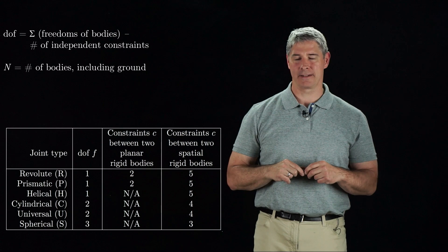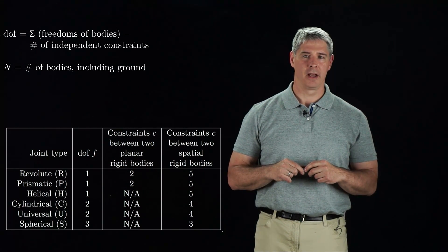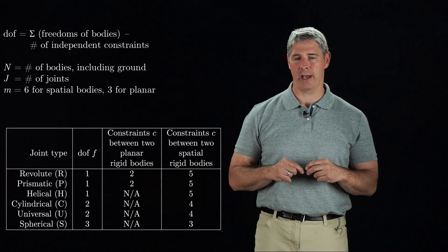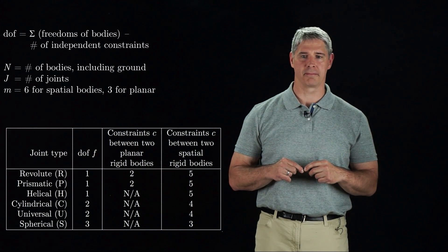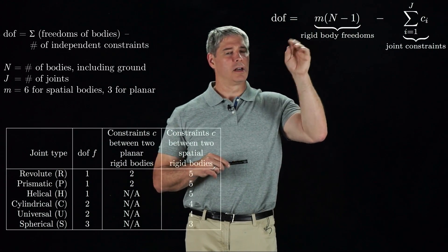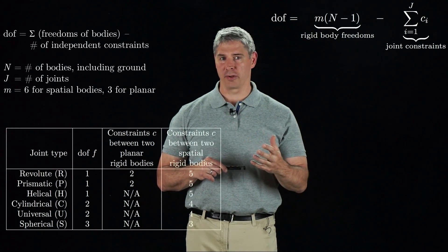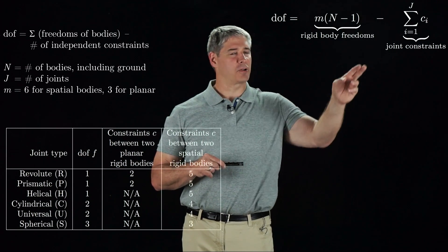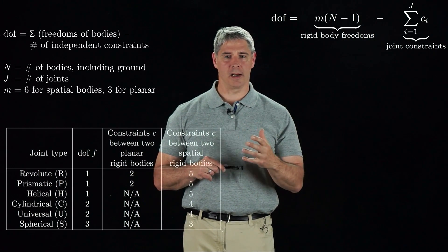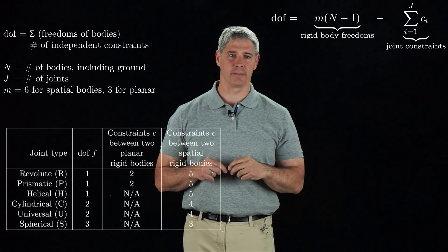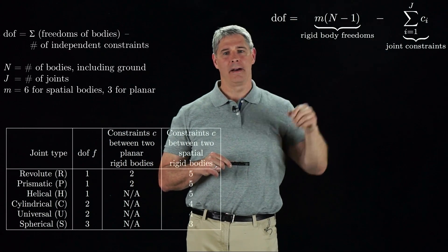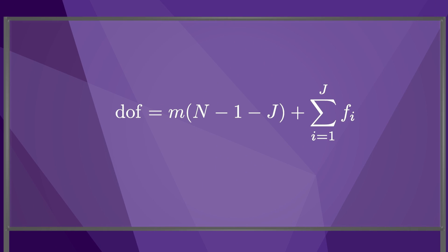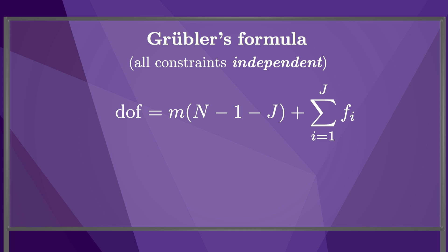Let's say the robot has n links. By historical convention, n includes ground as a link. The robot has j joints, and we define m to be the degrees of freedom of a single body — so m equals three for a rigid body moving in the plane, and m equals six for a rigid body moving in three-dimensional space. We can write our equation in terms of these variables: n minus one is the number of links other than ground, and m times (n minus one) is the total number of freedoms of the bodies if not constrained by joints. Then we subtract off the constraints provided by the j joints. Since the number of constraints provided by joint i is m minus the number of freedoms allowed by joint i, we can replace c_i by m minus f_i and rewrite the equation. Rearranging, we get Grubler's formula, which assumes that the constraints provided by the joints are independent.